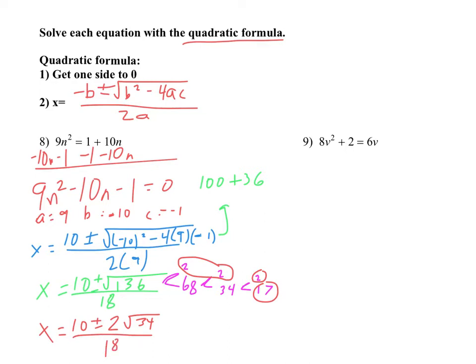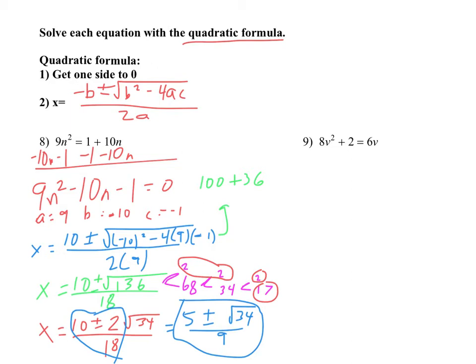Last step is to reduce. We're only allowed to reduce if all three numbers — the number out front, the number in front of the radical, and the number on the bottom — can all divide by the same number. I'll divide by 2: that gives 5 plus or minus the square root of 34 — technically 1 times radical 34, but we don't write the 1 — all over 9. That's our answer for number 8.